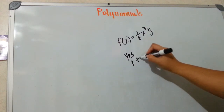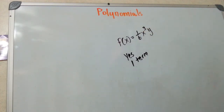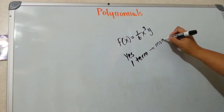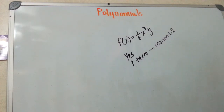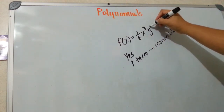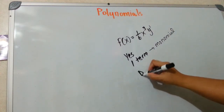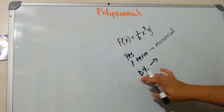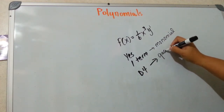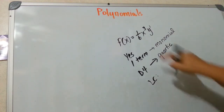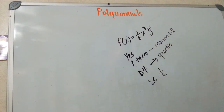How many terms do you see? I see one term — there's no plus sign or minus sign between them. Because it's one term, I would classify it as a monomial. What degree is this polynomial? I have two variables in one term, so I have to add the exponents. This one is 3 and this one is 1, so 3 plus 1 is 4 — this is a degree 4 polynomial. Based upon the degree, I can classify this as quartic. And my leading coefficient is 1 over 6.